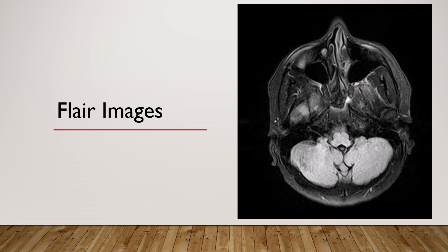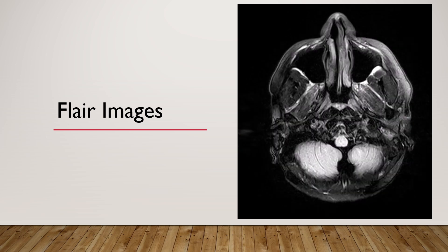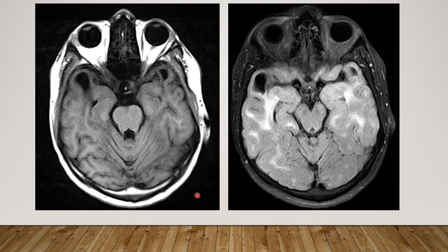There are subcortical cysts in bilateral anterior temporal and frontal regions. The cerebellum and brain stem are normal. Here we can see the subcortical cysts in the bilateral anterior temporal region. The pons appears normal.